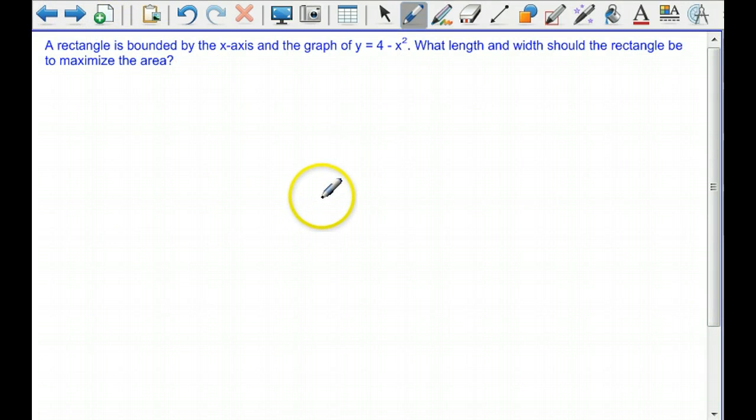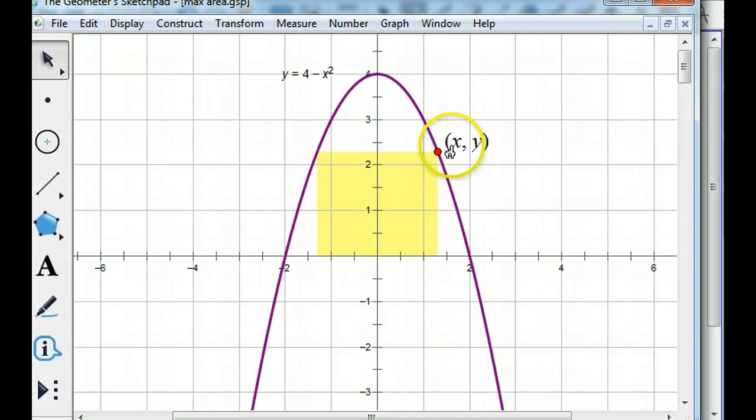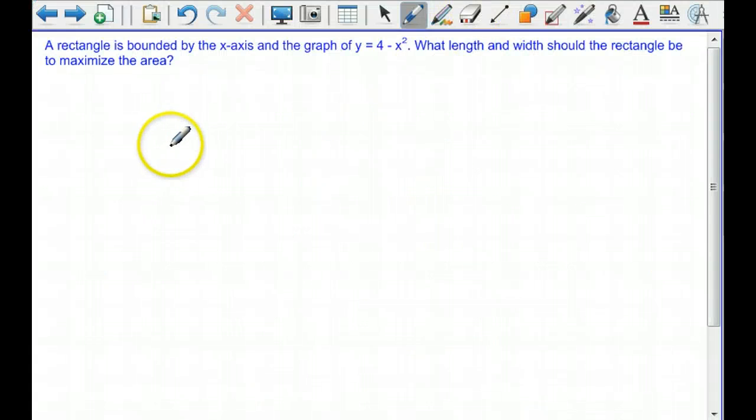One more. A rectangle is bounded by the x-axis and the graph of y equals 4 minus x squared. What length and width should the rectangle be to maximize the area? Here's the deal. This parabola is 4 minus x squared, and here's our rectangle bounded by the x-axis and that parabola. As I move this point around, the volume of that rectangle is going to change. We want to figure out where that point should be so that the volume of the rectangle is maximized.